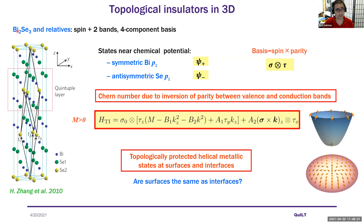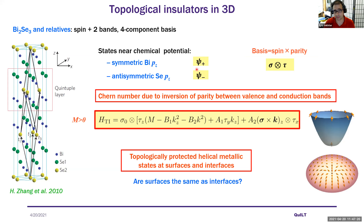A typical topological insulator is bismuth selenide, Bi₂Se₃, part of a whole family. We create an effective model by noting that the basic unit — a quintuple layer — consists of two bismuth layers and three selenium layers. Forming symmetric combinations of bismuth pz orbitals and antisymmetric combinations of selenium pz orbitals gives the states that contribute most near the chemical potential. Our basis is therefore spin plus parity, since the Chern number appears due to an inversion of parity between the valence and conduction bands.